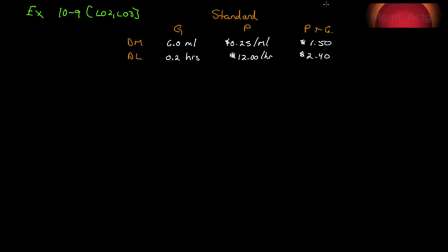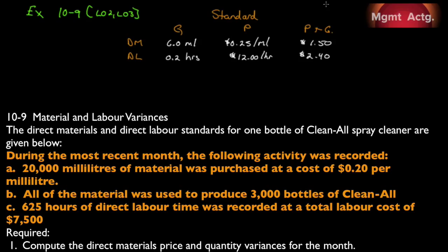We're looking at exercise 10-9, learning objectives 2 and 3, on material and labor variances. The direct materials and direct labor standards for one bottle of Clean All spray are given below. For direct materials, quantity is 6 milliliters at 25 cents per milliliter, giving a total cost of $1.50. For direct labor, the standard is 0.2 hours at $12 per hour, giving a standard cost of $2.40 per unit.